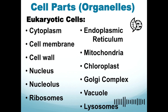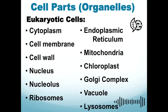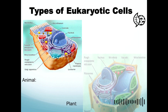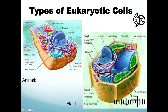Now let's proceed to the parts of the cell, or what we call organelles — also referred to as 'little organs.' The parts of the cell include the cytoplasm, cell membrane, cell wall, nucleus, ribosomes, endoplasmic reticulum, mitochondria, chloroplasts, Golgi complex, vacuoles, and lysosomes. Before discussing each one, note that plant cells have a square shape due to the cell wall, while animal cells have a spherical shape.